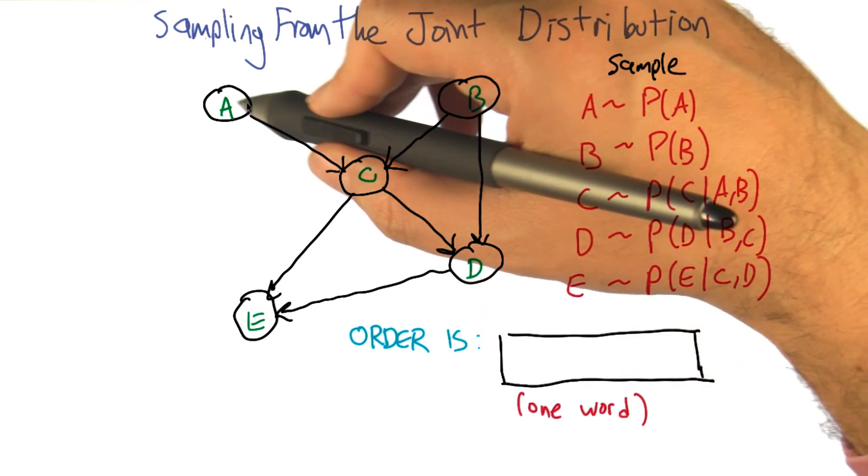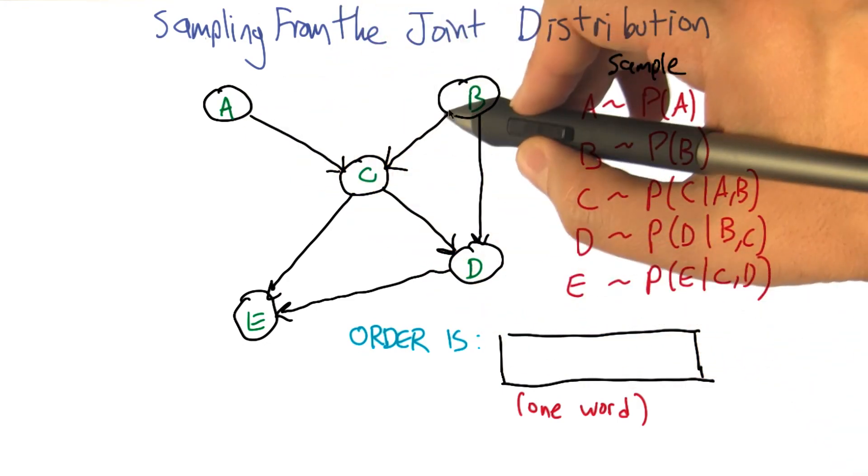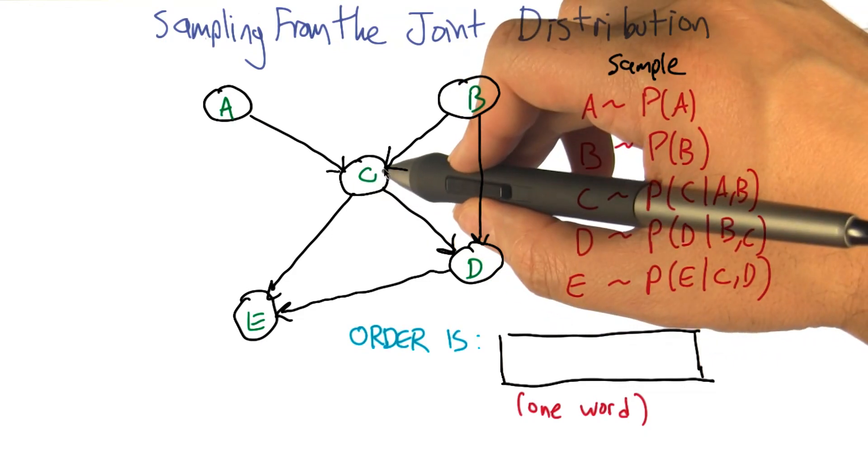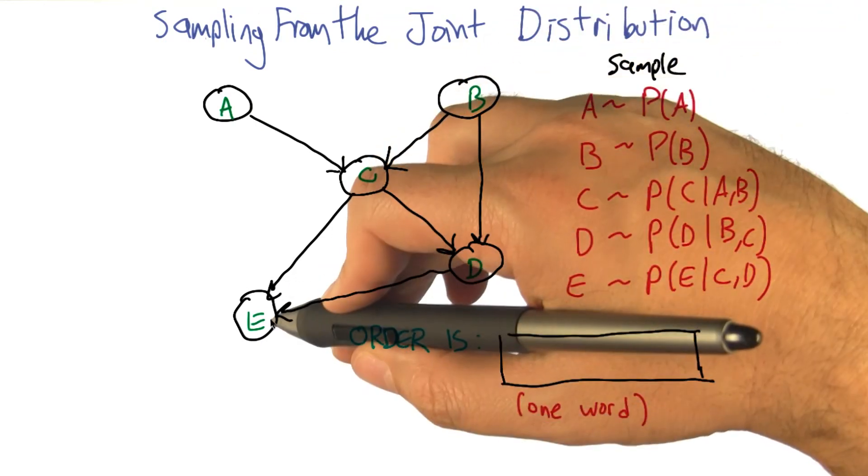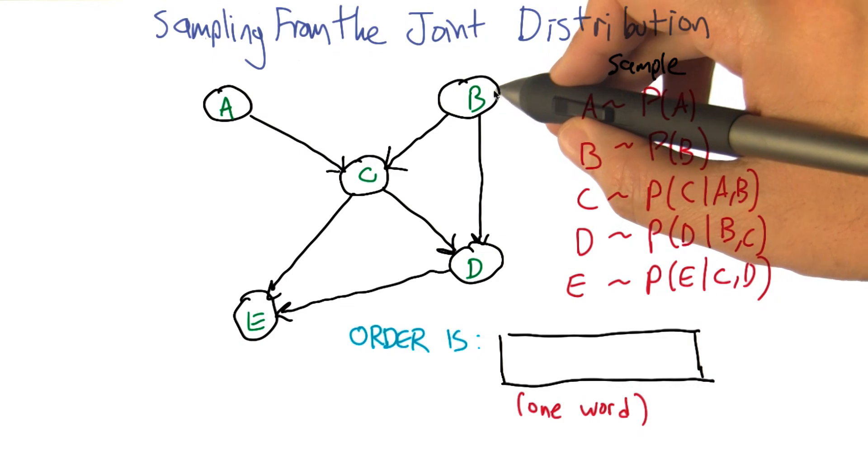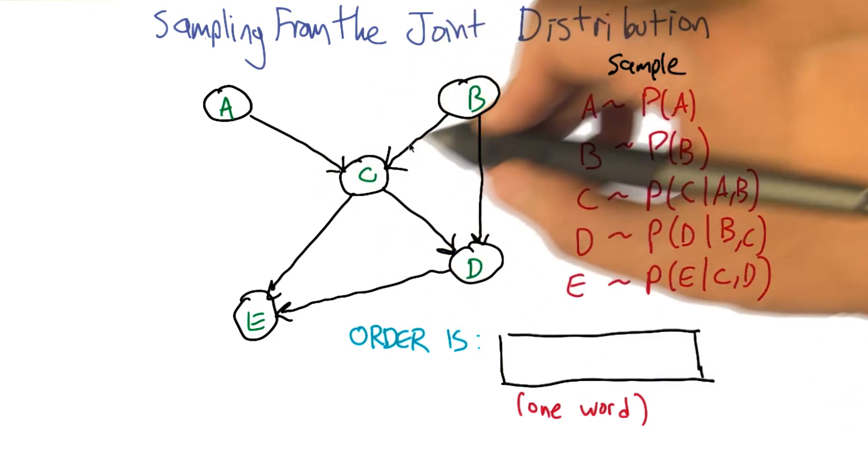But we can sample from that distribution. Each joint value of A and B gives a distribution over C. And we do the same thing for D, and the same thing for E. And when we're done, what we've sampled from is actually the joint probability distribution.